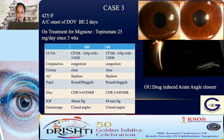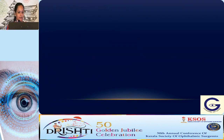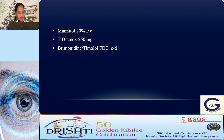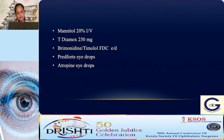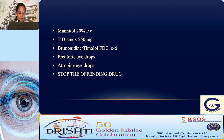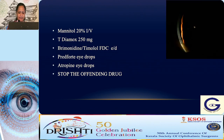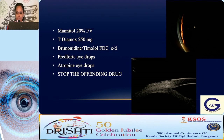A UBM confirmed ciliochoroidal effusion. Management: reduce acute IOP rise with topical and oral anti-glaucoma medications, start steroids — topical steroids suffice most of the time, but systemic steroids may be needed depending on extent of effusion. Atropine as a cycloplegic plays a major role. Most importantly, stop the offending drug. In five days the AC deepened and in two weeks it returned to normal including on ultrasound.